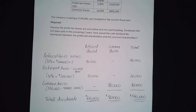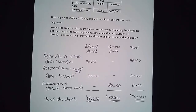Keep in mind, if preferred shares are cumulative, it means that we have to pay 100% of the dividends that are in arrears — the dividends that were missed in past years. Remember that they are always owed to the preferred shareholders.